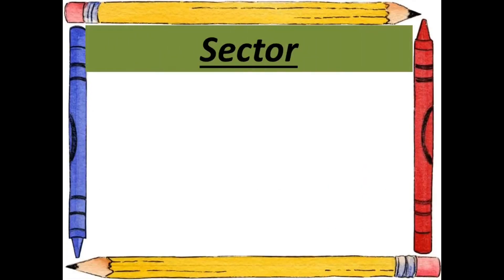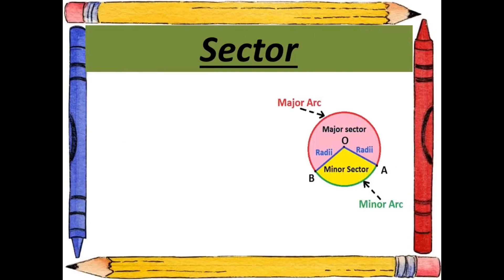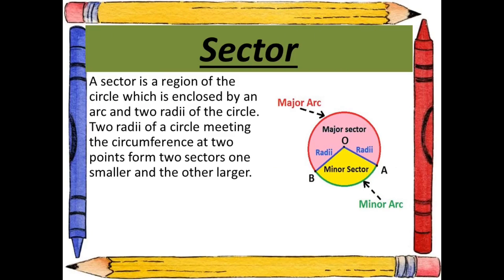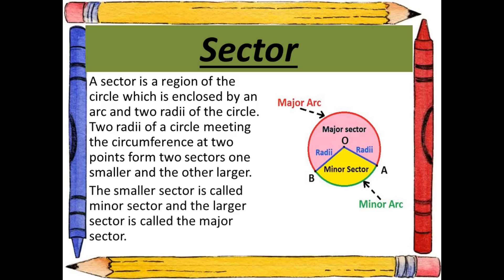A sector is a region of the circle enclosed by an arc and two radii of the circle. Two radii of a circle meeting the circumference at two points form two sectors — one smaller and one larger. The smaller sector is called the minor sector and the larger sector is called the major sector.